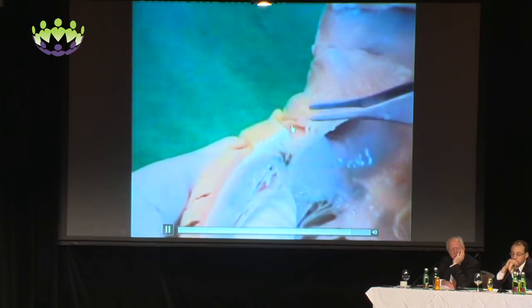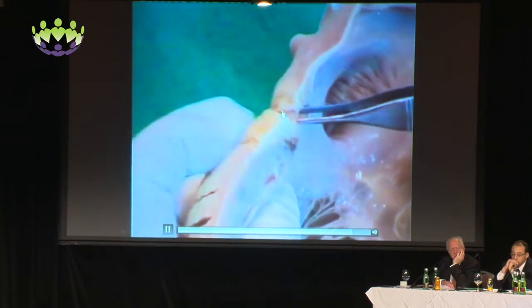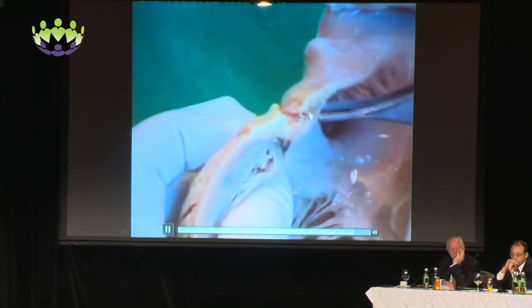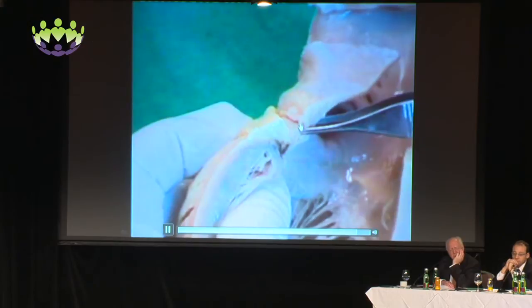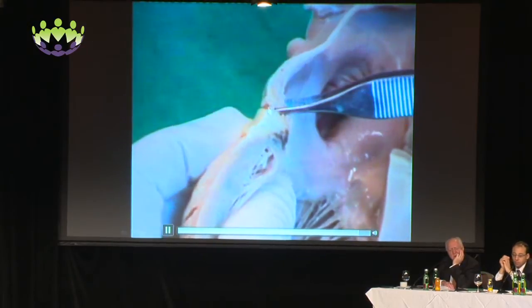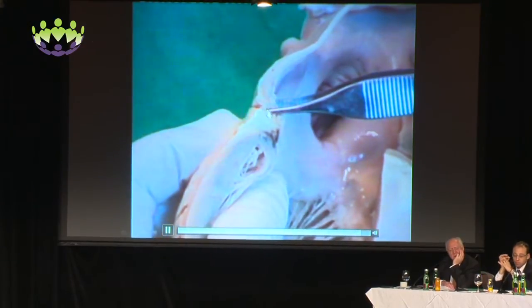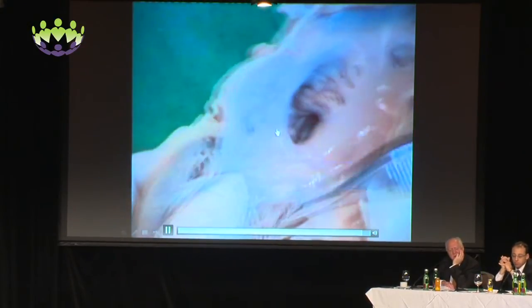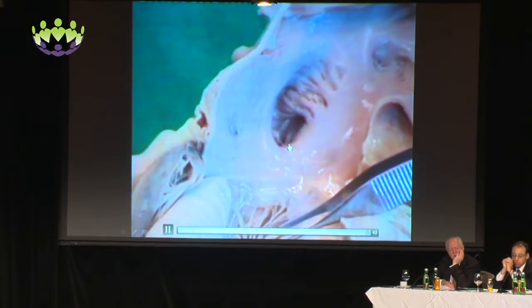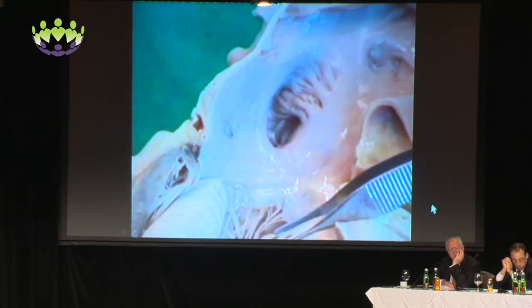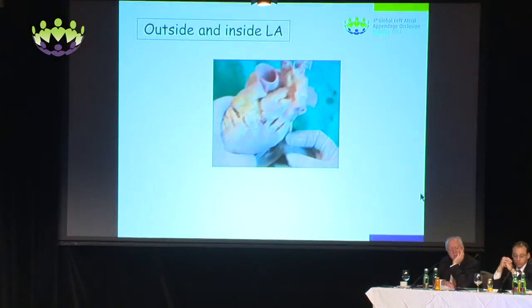And over here on the outside of the left atrial wall, we see the great cardiac vein coming around the left atrioventricular groove tissue to join with the coronary sinus.